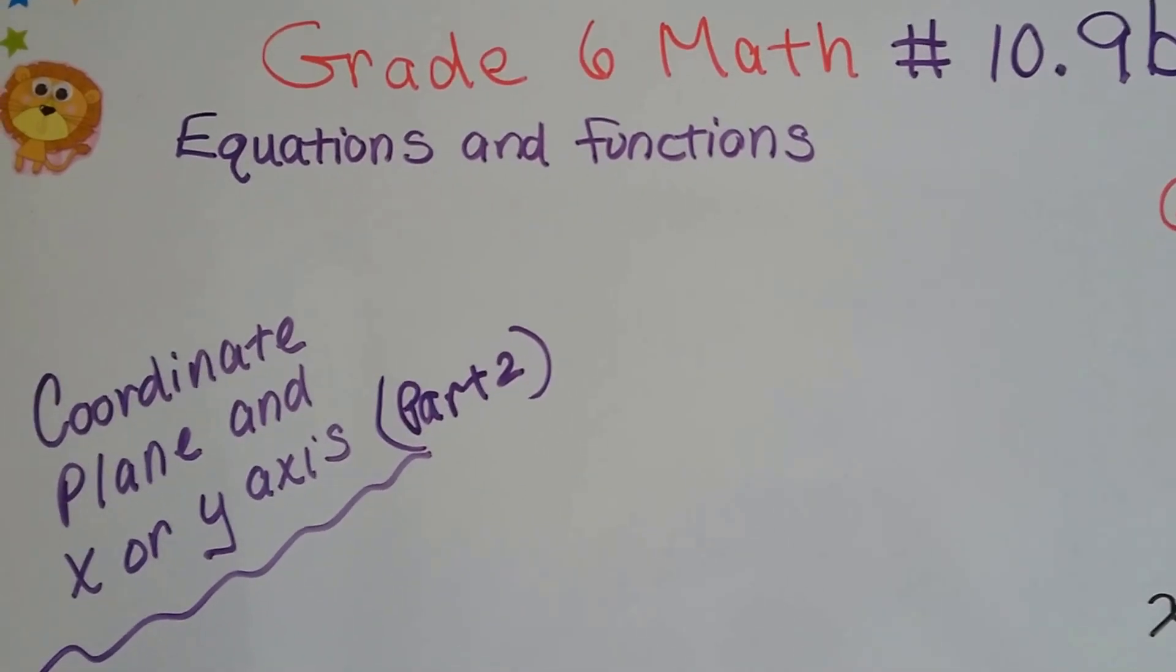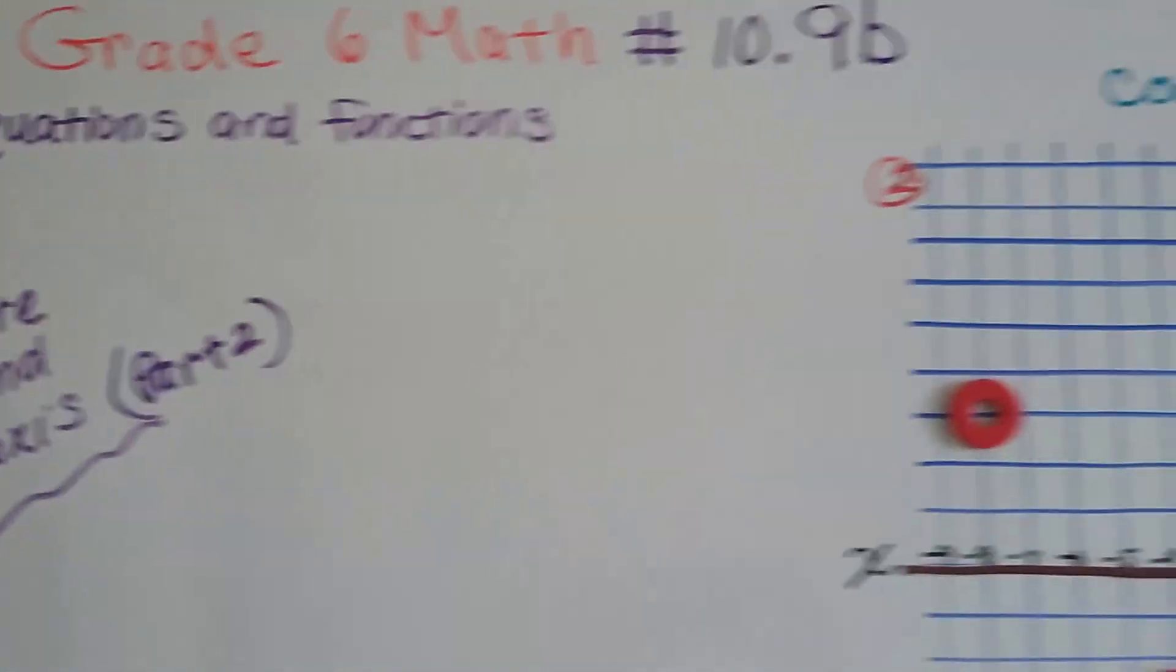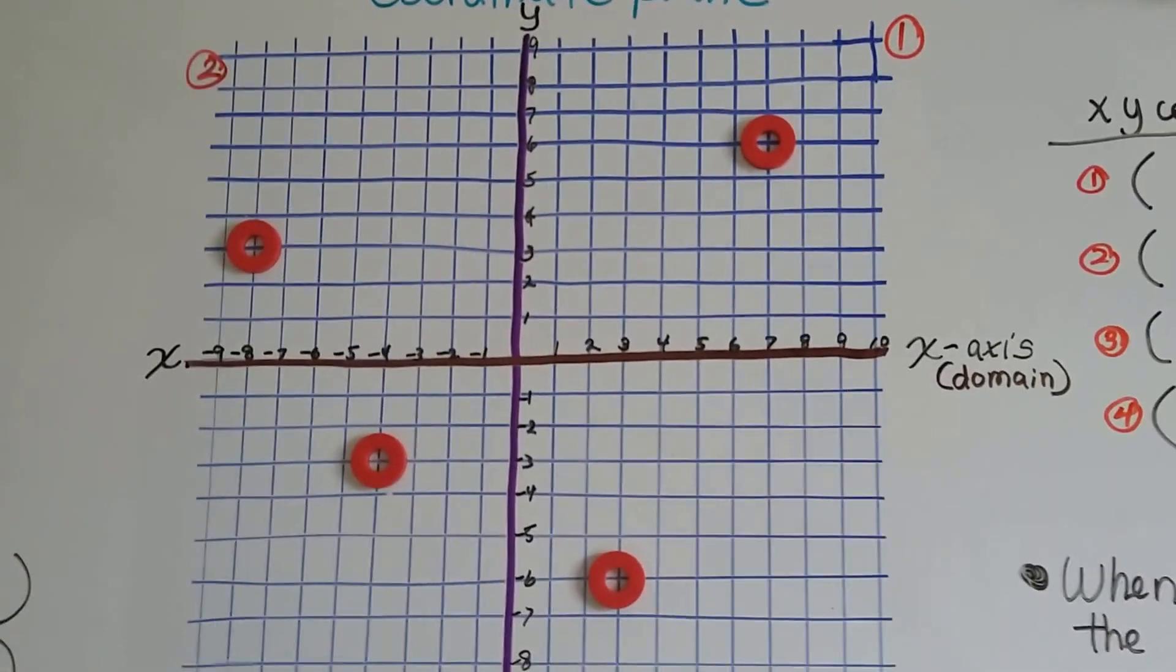Grade 6 math number 10.9b, coordinate plane and x or y axis part 2. I hope you saw 10.9a because you'll be very confused if you didn't.